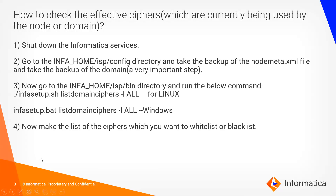First, we need to check the effective ciphers — effective ciphers meaning which are currently being used by the domain or node. For that, we need to shut down the Informatica services. Go to the infahome/isp/config directory and take the backup of the node_meta.xml file and take the backup of the domain, which is a very important step. Now go to the infahome/isp/bin directory and run the command: infasetup.sh listdomainciphers -l all. This command is for Linux and the same .bat for Windows. Here -l refers to list.